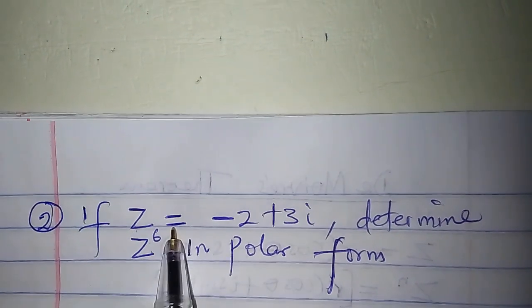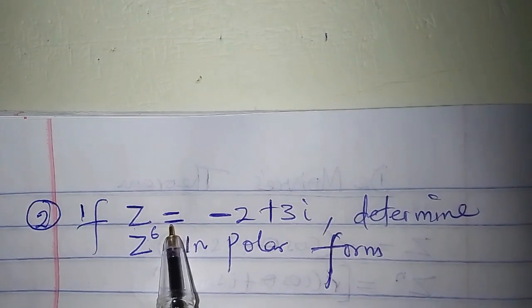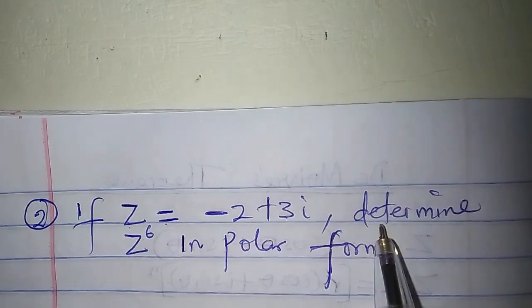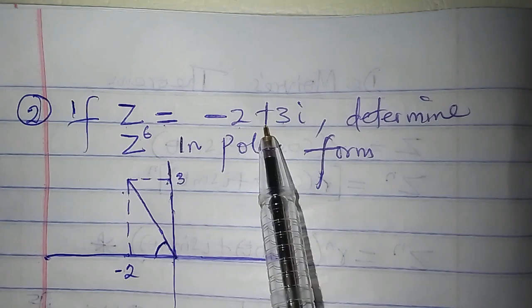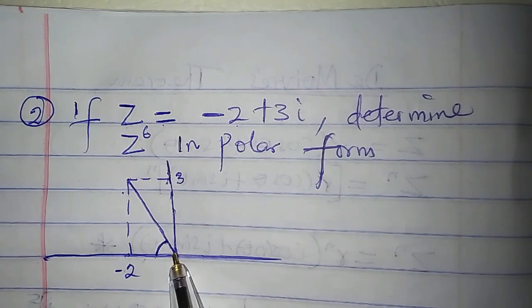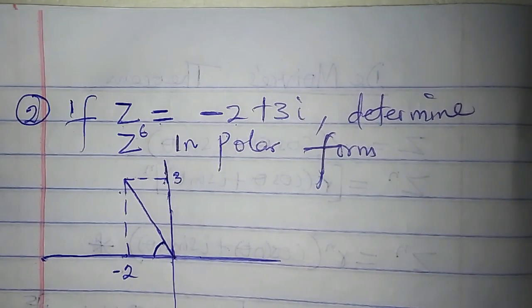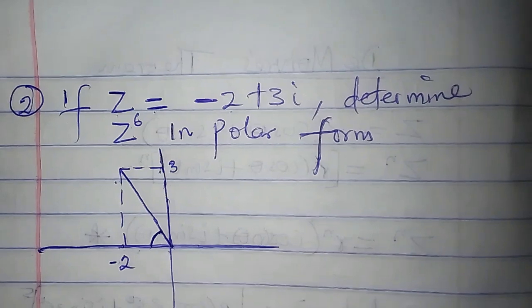If z is equal to minus 2 plus 3i, determine z to the power of 6 in polar form. This is the complex number on an Argand diagram. Let us determine the polar form of this complex number first of all.